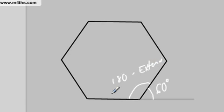This one here is just 180 minus the external angle, which is going to give us 120 degrees. We can say that each interior angle is 120 degrees. This one's going to be 120. This one is, this one is, this one is, and that one.